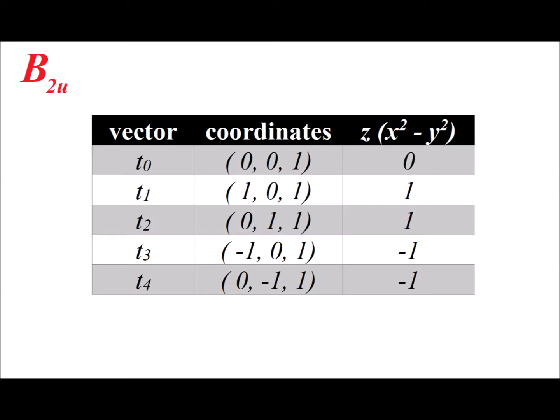Now, for the second and final torsion vibration, the B2U, we use the basis function z times the quantity x squared minus y squared. We get these basis functions from each irreducible representation in the point group D4H, you can find these in any character table for our point group.